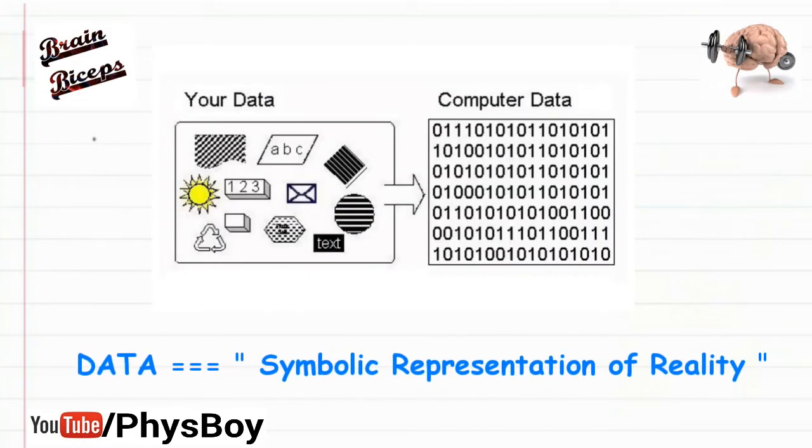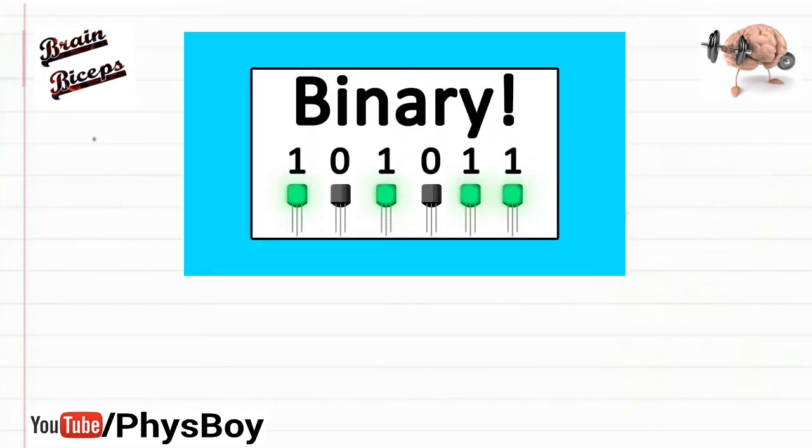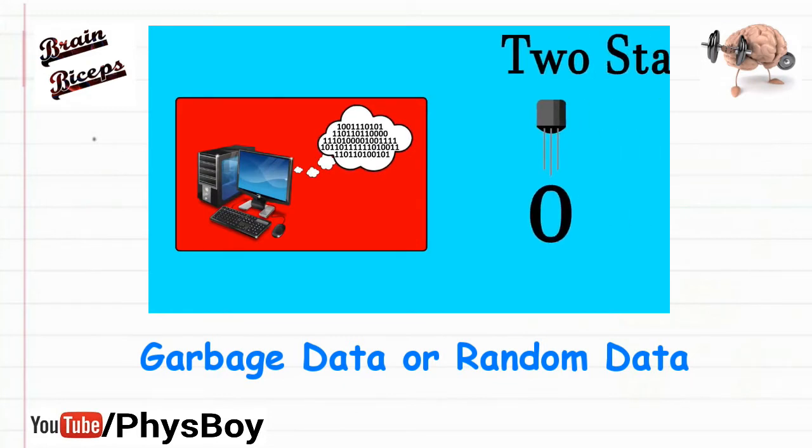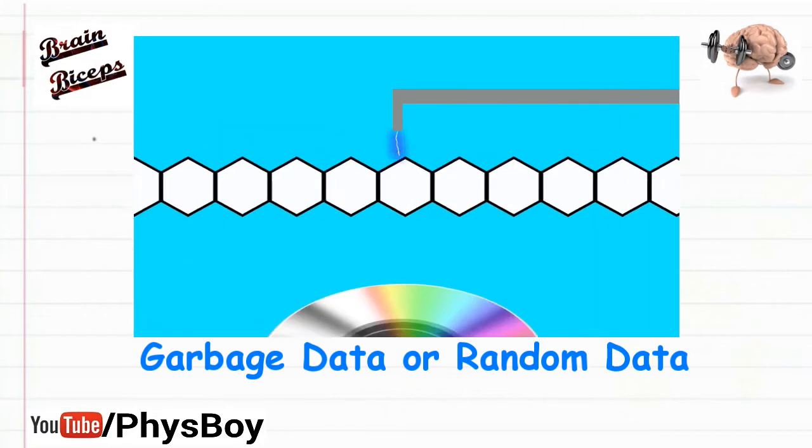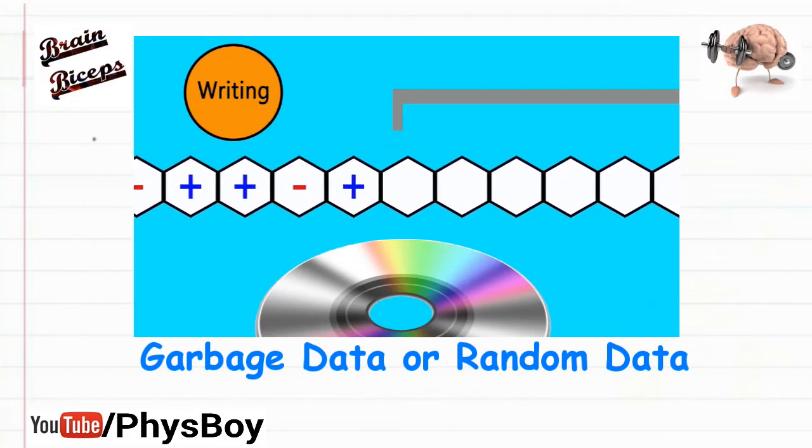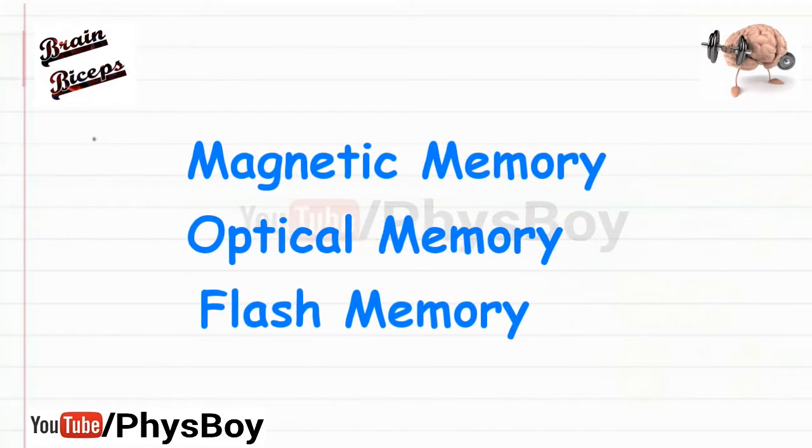There are lots of data present even in an empty hard disk. This data is called garbage data or random data. Whenever we put some useful data or information to a hard disk, we actually rewrite this garbage data.